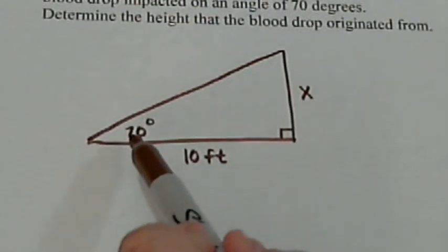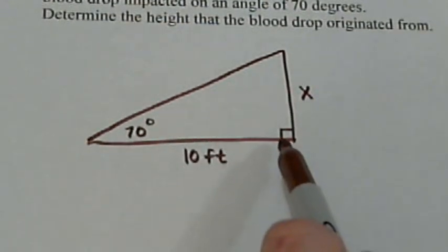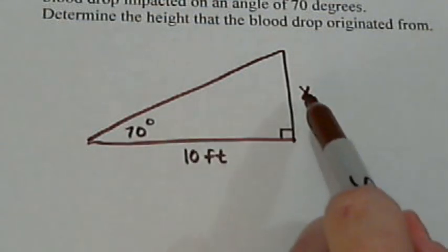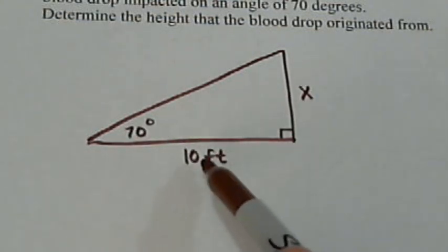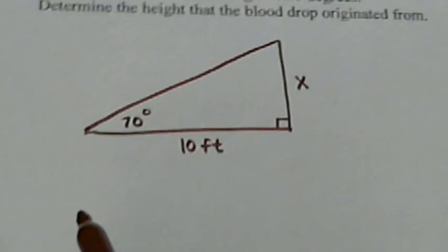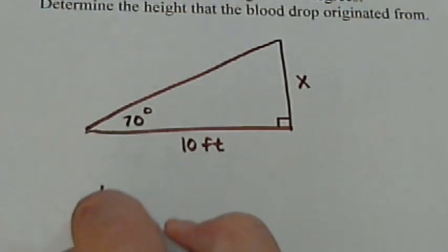Well, what we've got here is we've got an angle, we've got a right triangle, and we've got the opposite and the adjacent side. And when we have those informations, we use the tangent function.